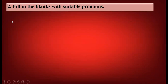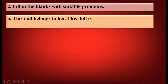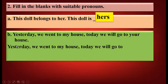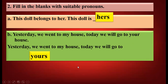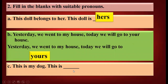Let us solve an exercise with suitable pronouns. The first one: 'This doll belongs to her. This doll is dash.' We will use H-E-R-S, 'hers', as a possessive pronoun. Next: 'Yesterday we went to my house. Today we will go to your house.' We write 'yours' for 'your'. Next: 'This is my dog. This is dash.' — so we write 'mine'. That means this is my dog.